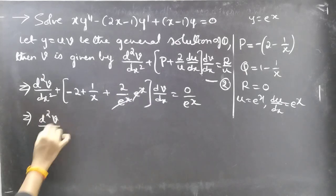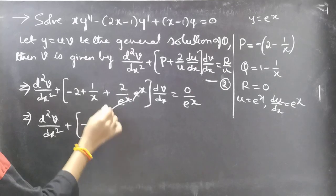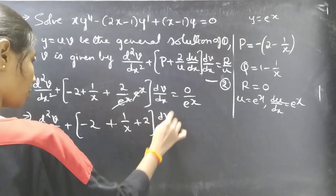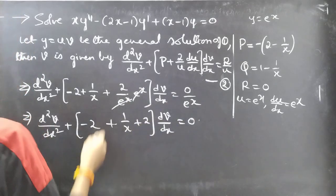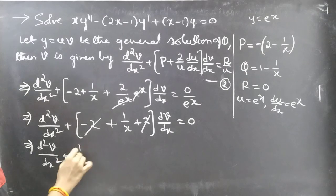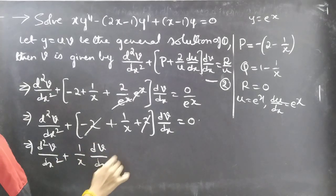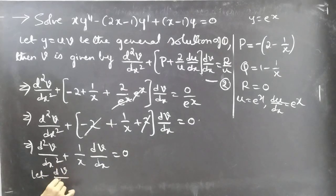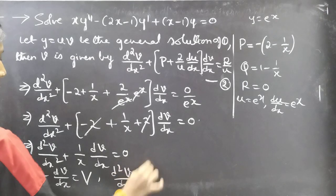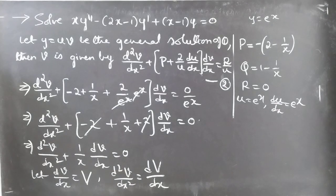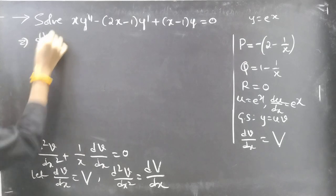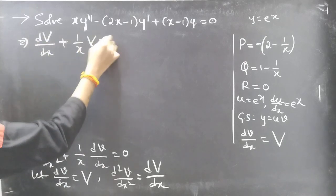Simplifying: the −2 and +2 cancel, leaving d²v/dx² + (1/x)·dv/dx = 0.